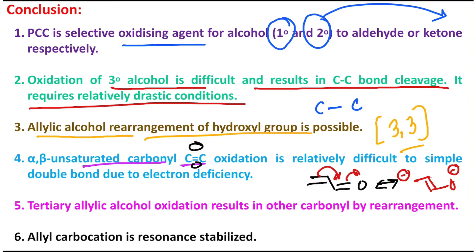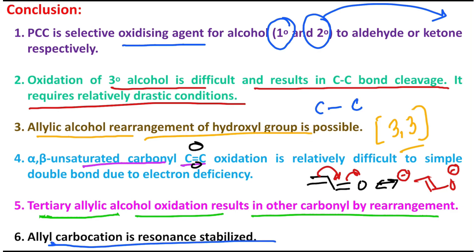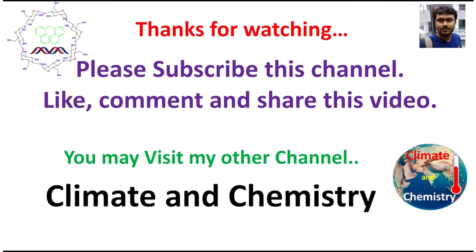By the way, there is a dedicated lecture on alpha-beta unsaturated carbonyl conversion to the corresponding epoxide using hydrogen peroxide and base — it is a unique concept, please visit. This tertiary allylic alcohol oxidation results in other carbonyl rearrangement. The most important final point is that allylic carbocations are resonance stabilized, which is why they are produced easily and are actually stable. I believe this video may be useful.